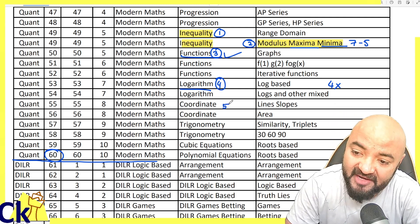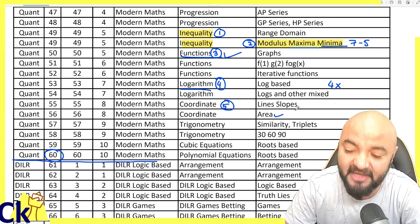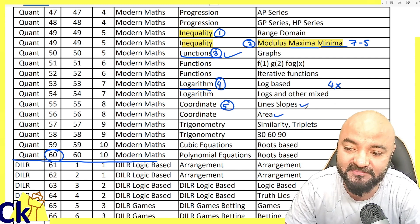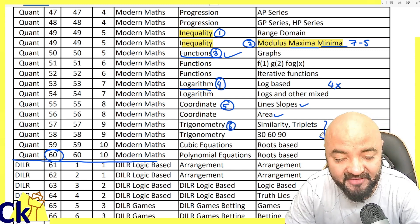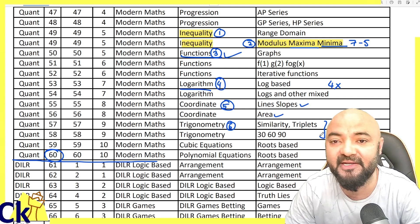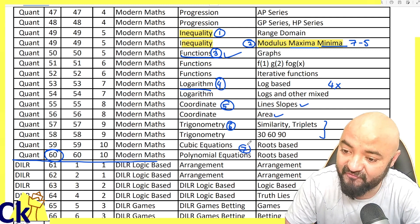Number five is coordinate geometry - one question, mostly based on area or lines and slopes. Number six is trigonometry. This doesn't come every year, but you can get one question based on trigonometry.